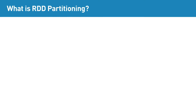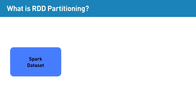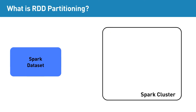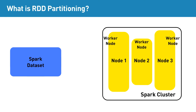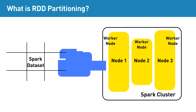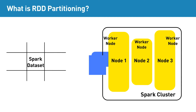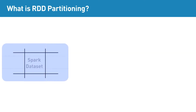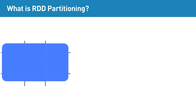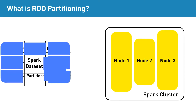First, what is RDD partitioning? Partitioning in general is nothing but dividing the dataset into parts. If the dataset is too large, it cannot fit into a single node in the cluster. So we need to split the dataset into different parts and store it into different nodes of the cluster. In Hadoop, the dataset is divided into different parts known as blocks and they are stored into different nodes of the Hadoop cluster. Similarly, in Spark, the input dataset is divided into different parts called partitions and are stored into worker nodes of the Spark cluster.